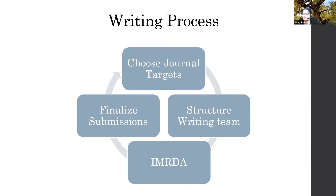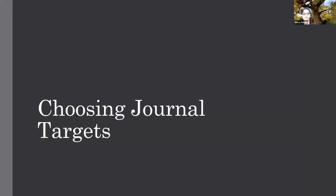Some of this might be really basic, so I apologize for people with a lot of experience, but I'm going to do a little bit of a deep dive on the different sections to demystify it. Then we'll talk about how you might be a good co-author when you finalize your submission and how to work in a team. The first thing I like to spend time on is choosing journal targets, because if you get good at this you can save yourself a lot of pain in terms of time and having to resubmit over and over.